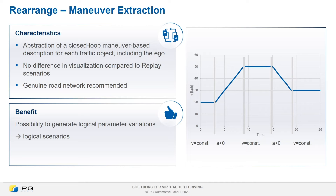This means, for example, that the speed profile, like the one we had in replay, is decomposed into components such as constant speed driving and acceleration phases. The same is done for the lateral behavior, where it is necessary to detect lane changes. The advantage of this step is that it allows us to create variable scenarios, so-called logical scenarios.